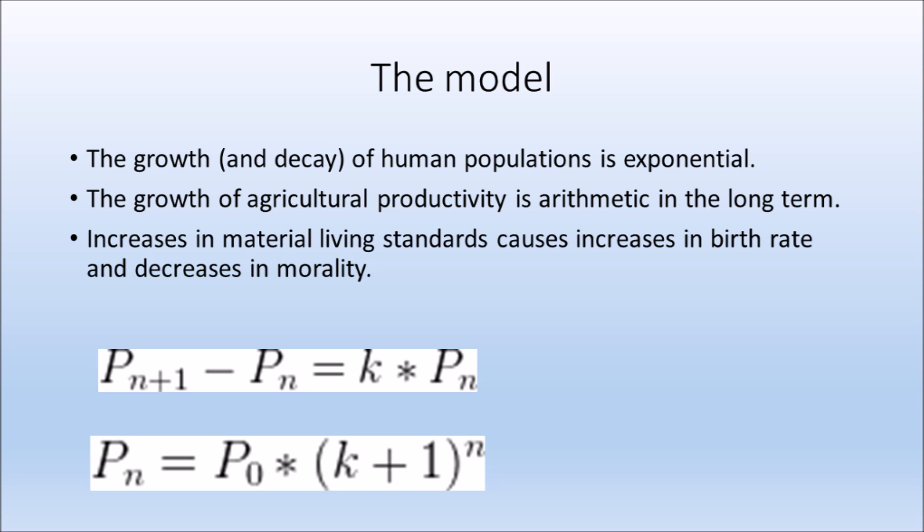Number one: the growth and decay of human populations is exponential. Number two: the growth of agricultural productivity is arithmetic in the long term. And number three: increases in material living standards cause increases in birth rate and decreases in mortality.